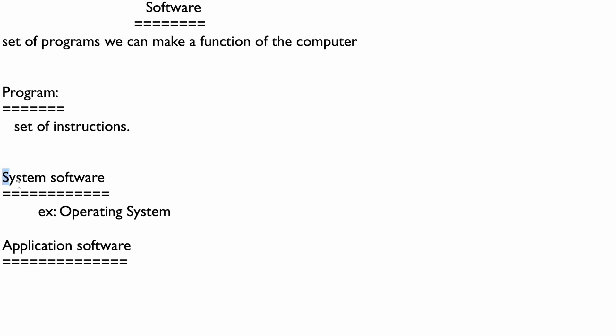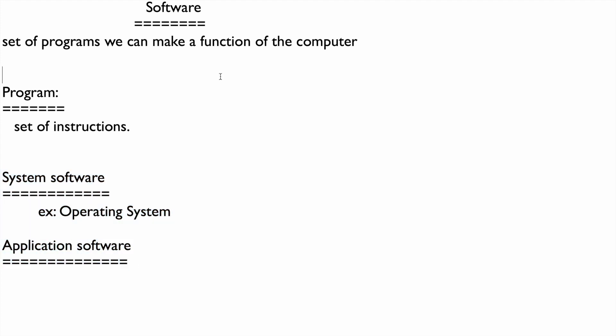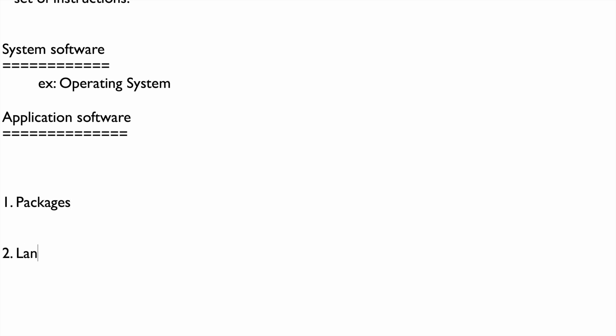From the programming side, software is divided into two categories: first, packages, and second, languages. What do we mean by packages and languages?